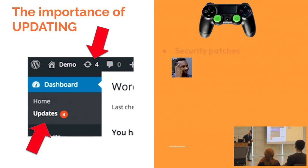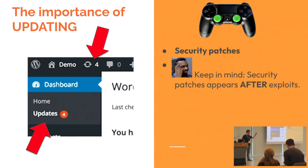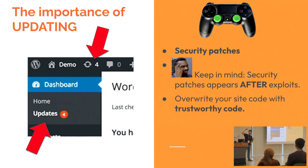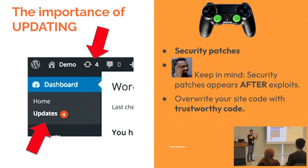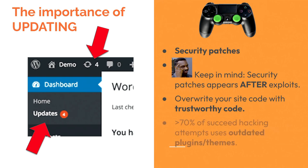For backups, I recommend VaultPress using Jetpack, Updraft, or if you're expert enough, develop your own solution. The importance of updating: it provides security patches, and security patches always come after the exploit - so if there's a security patch, it's because someone is already abusing the vulnerability it covers. Also important: updating overwrites your code with trustworthy code. Every time you update, you just remove the plugin, remove the WordPress core or theme, and put the new one - which helps assure the code is now clean. About 70% of attacks happen because of outdated plugins and themes.